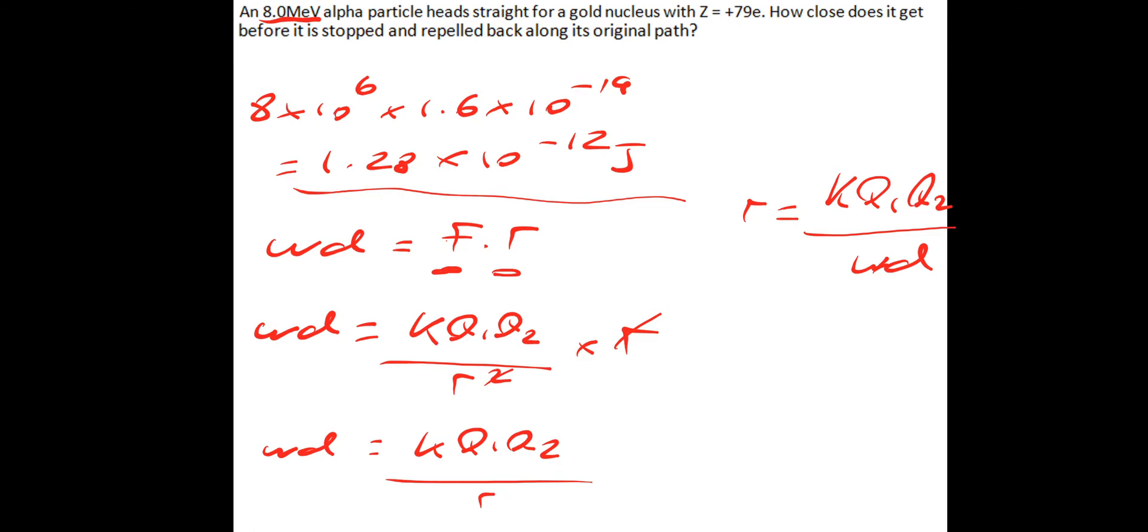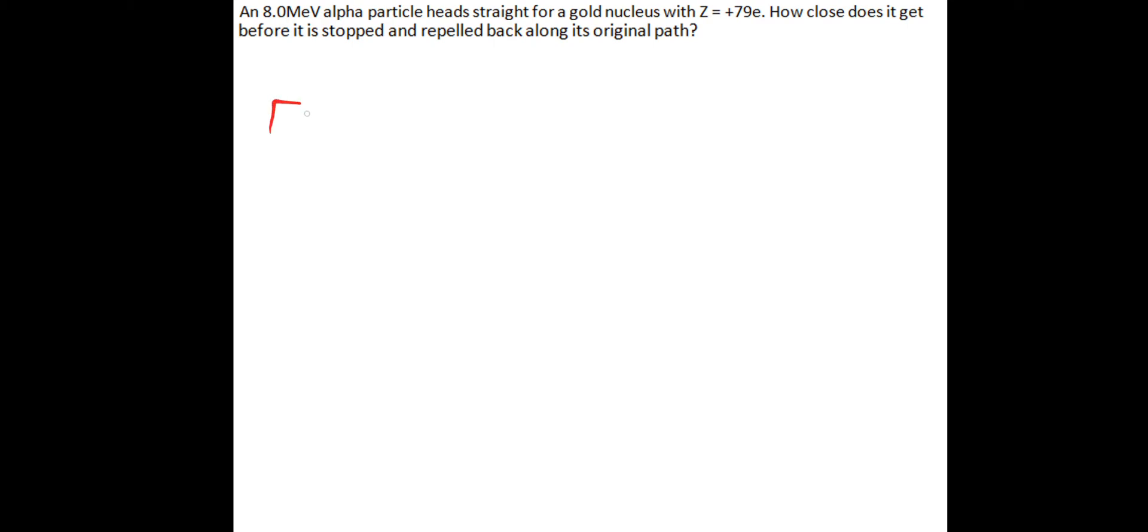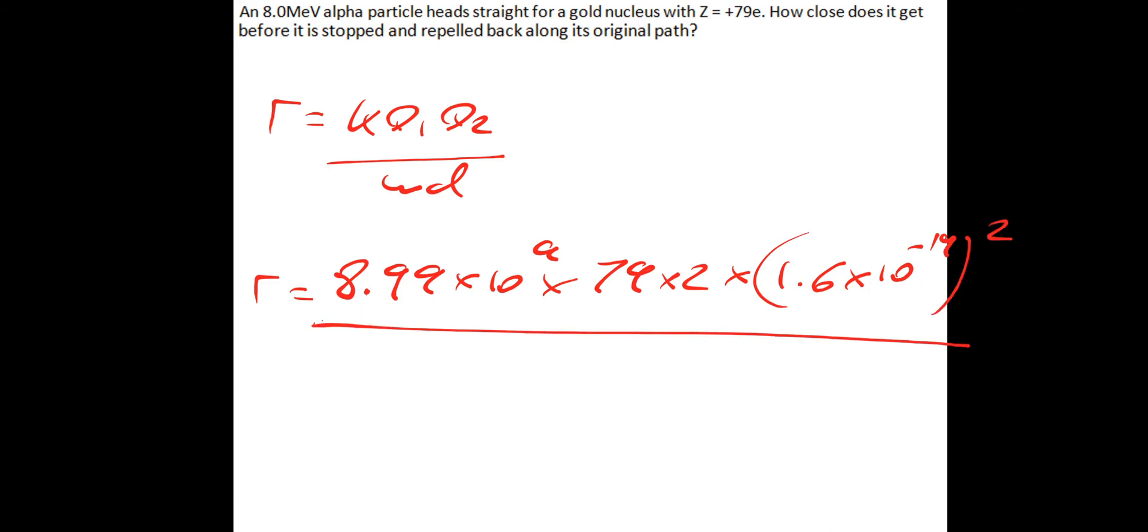So what I'm going to do is clear this, and then just put our numbers in and see what we get. So distance R is K, Q1, Q2, over the work done. So let's just put our numbers in, so K, which we've used lots now, is 8.99 times 10 to the power of 9, times charge 1. So we've got 79 times the charge of a proton. And then we've got to multiply that by charge 2, which is 2 times the charge of a proton. So we can do 79 times 2, times the 1.6 times 10 to the minus 19 squared. And then divide that by the work done. So the work done we got earlier to be 1.28 times 10 to the minus 12. And if you put that in your calculator, that will give you the distance of closest approach for this 8 mega electron volt alpha particle.